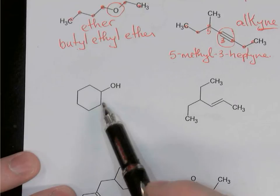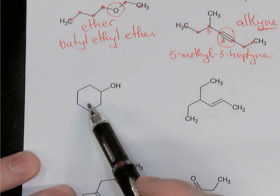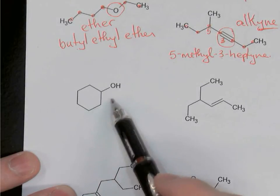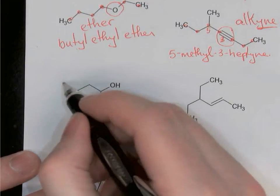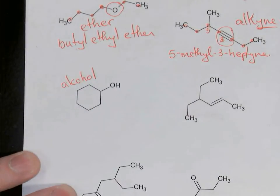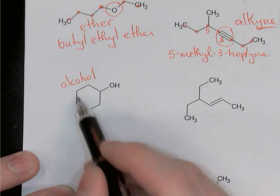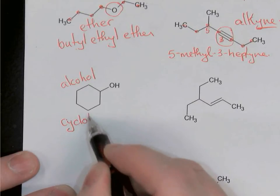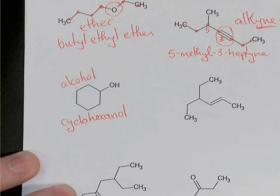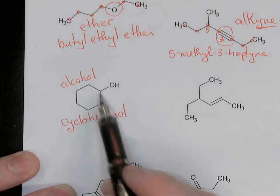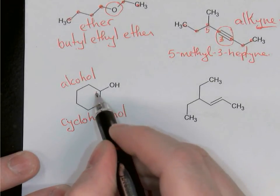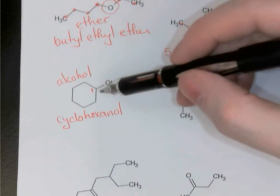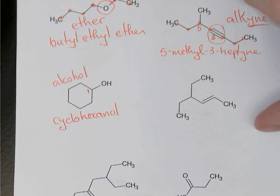The next example has a couple of features. One is this ring — there are no multiple bonds in it, so this is not a benzene ring. It's simply six carbons in a ring, so that's a cyclohexane. But it also has an OH, which is the functional group for an alcohol. Because it's an alcohol bonded to six carbons in a ring, this is cyclohexanol. You don't need to number anything, because whichever carbon in the ring has the alcohol group is automatically carbon 1.